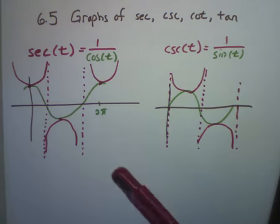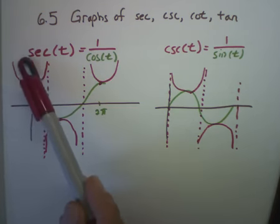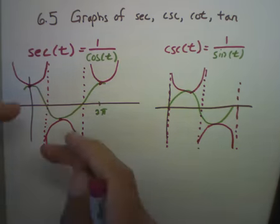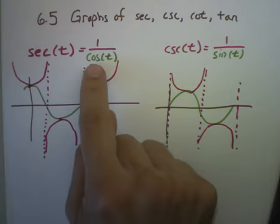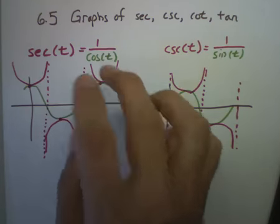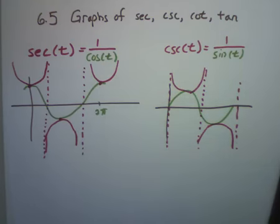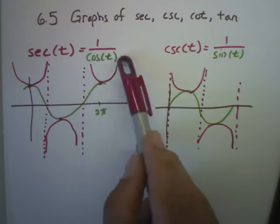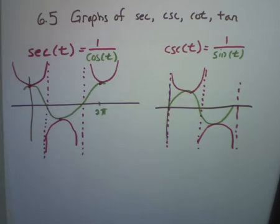And really if we want to do a transformation, if we want to do two times secant, all the same rules apply. We can just stretch everything by two. It's also possible to graph two times cosine, graph the green graph first, and then just draw the bounces off of that. Whichever way is easier: either just draw secant and then transform it, or draw transformed cosine and then draw secant off of it.